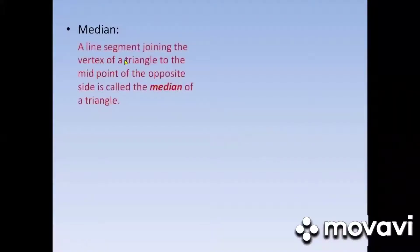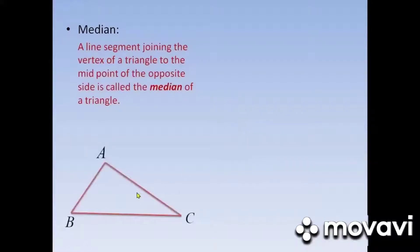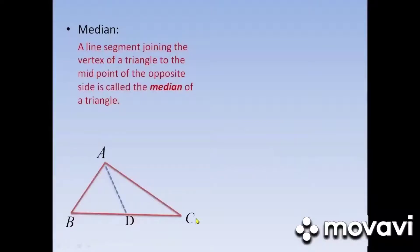Besides this, there are some other parts of a triangle. Median — a line segment joining the vertex of a triangle to the midpoint of the opposite side is called the median of a triangle. In triangle ABC, AD is a line segment joining the vertex A to the midpoint of BC, in which BD is equal to DC because D is the midpoint of BC.